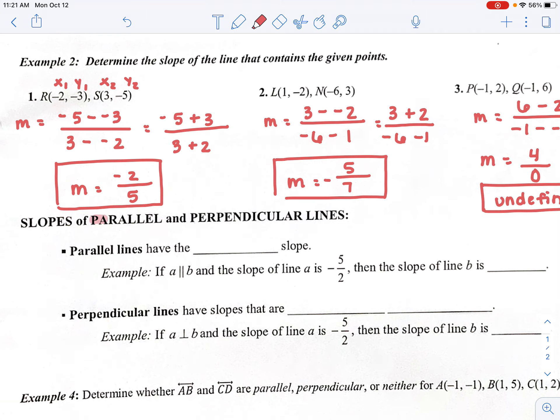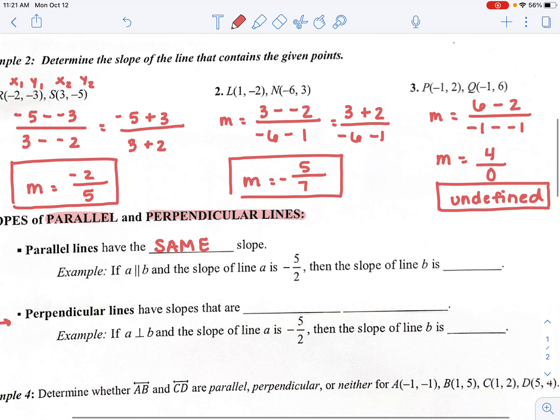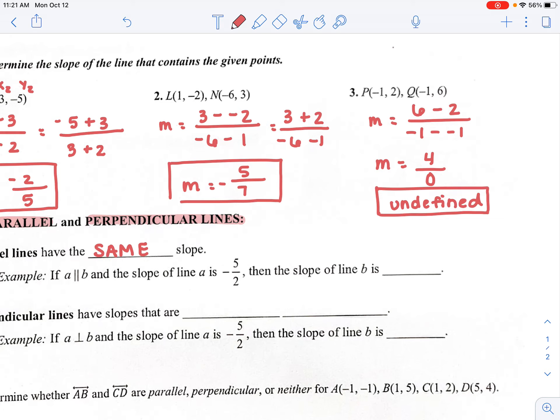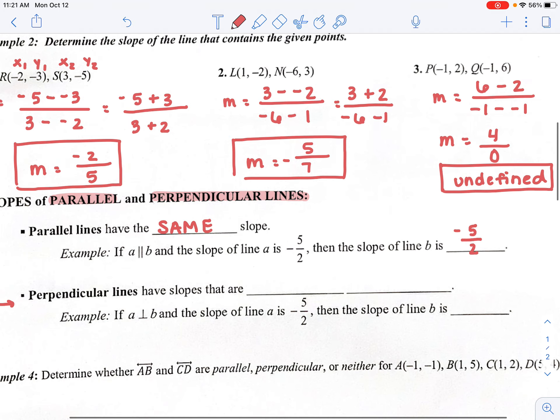So when you get 0 in that denominator, you actually have an undefined slope. Last little bit here. So slopes of parallel and perpendicular lines. We have parallel lines and perpendicular lines. An example of parallel lines. Parallel lines will never intersect each other. They go on forever and ever. So parallel lines have the same slope. So if A and B are parallel and the slope of line A is negative 5 over 2, the slope of line B is going to be the exact same, negative 5 over 2.